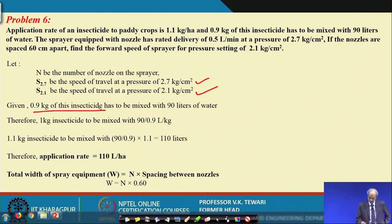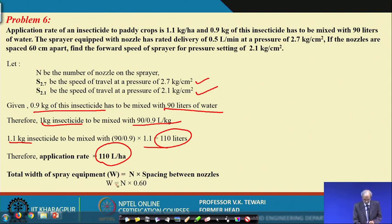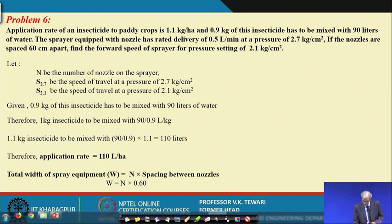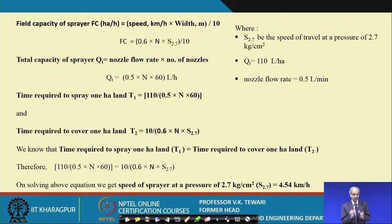Since 0.9 kg of insecticide is mixed with 90 liters, 1 kg corresponds to 100 liters per kg, so 1.1 kg per hectare gives an application rate of 110 liters per hectare. The total width of spray is given as N times spacing between nozzles, giving the total spray width W. Field capacity of the sprayer is then W times S divided by 10, the standard formula where S is speed in km/h and W is width in meters, giving field capacity in hectare per hour.